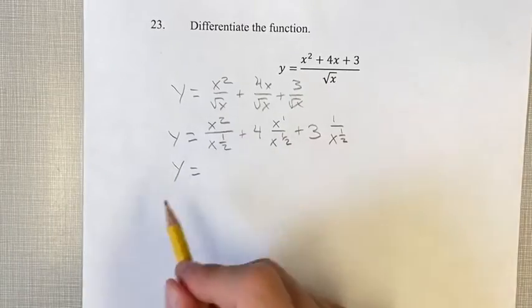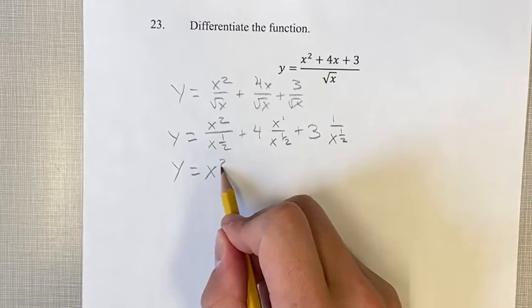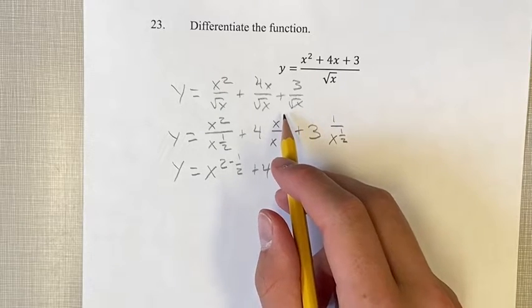Simplifying this, you can use the quotient rule. When you're dividing these, you can subtract the exponents and turn them into one term. So x to the 2 minus 1 half plus 4, same thing here, subtract the exponents,